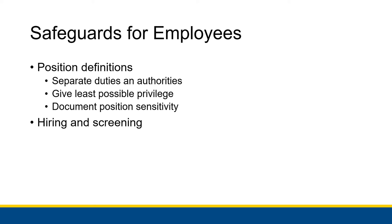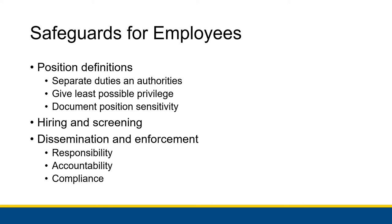In new employee training, you have to disseminate all the security information, because an employee won't know what they're supposed to do if they're not actually told. This dissemination and enforcement is all about telling employees what their responsibilities are with regards to security and then actually enforcing it if they mess something up. Employees should be able to be held accountable for their actions by design of the security program — if an employee does something bad, there should be accountability and a way to identify who did it.